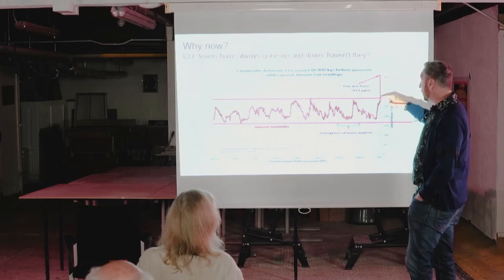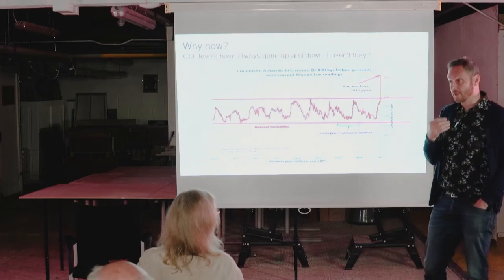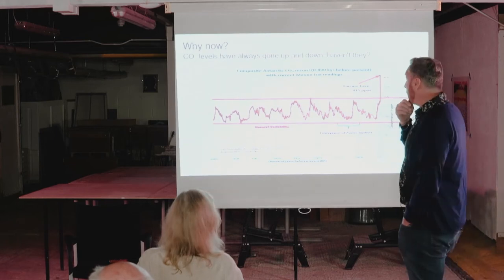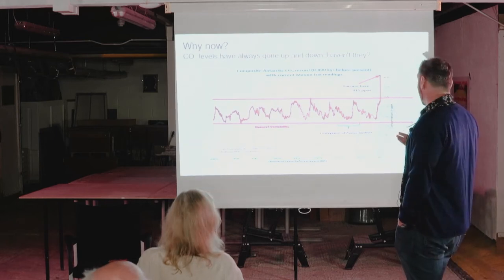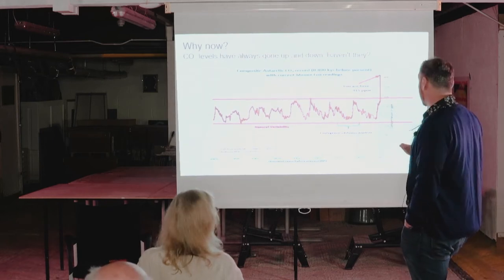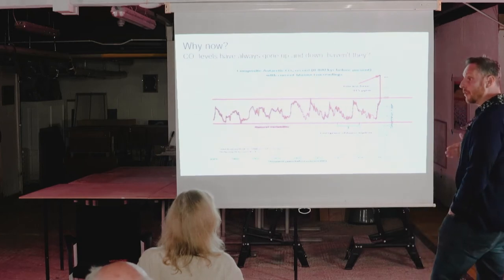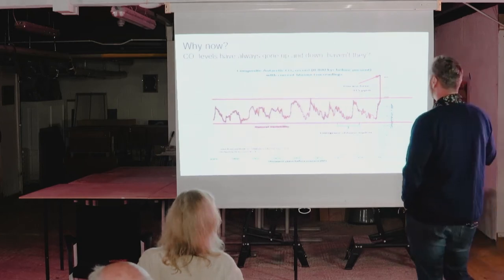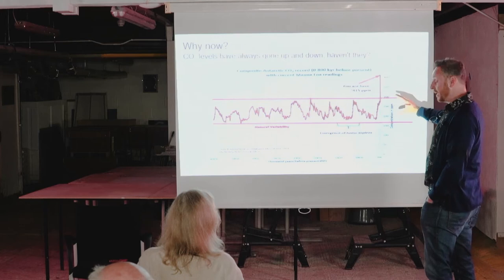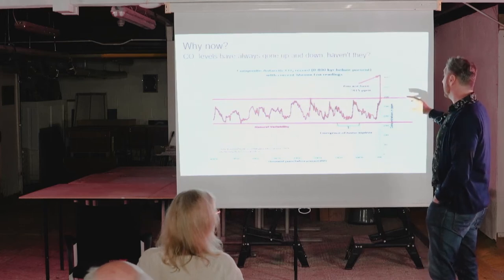We've come since the start of the industrial revolution. So if someone talks about the natural variability of carbon dioxide in the atmosphere, you can completely agree with them — and you can also agree that we are way, way, way outside of the bounds where we've been for the last almost one million years.